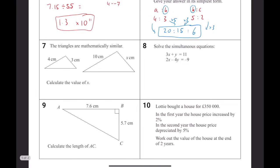The triangles are mathematically similar. Calculate the value of x. So to go from 4 to 10, we can do 10 divided by 4, which equals 2.5. So that's a scale factor of 2.5. That means we need to do 3 multiplied by 2.5, which is going to give us 7.5.